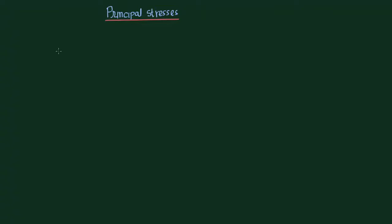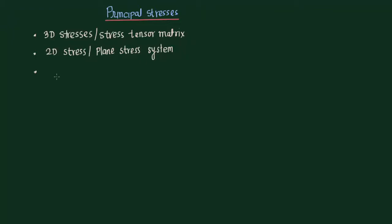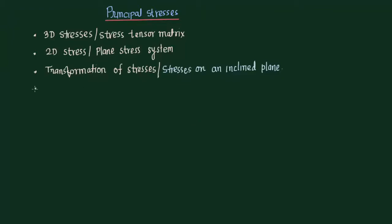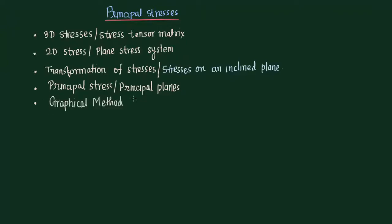We shall be learning initially various types of stresses — three-dimensional stresses, also known as the stress tensor, then two-dimensional stresses, also known as the plane stress system. Then we shall talk about the transformation of stresses from one plane to another plane. After that we shall discuss about principal stresses and principal planes. Having understood that, we will discuss a graphical method known as Mohr's circle.